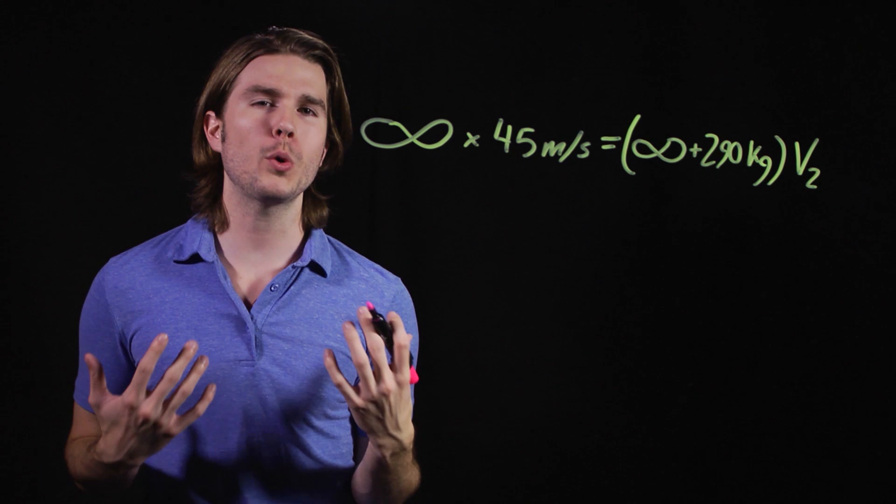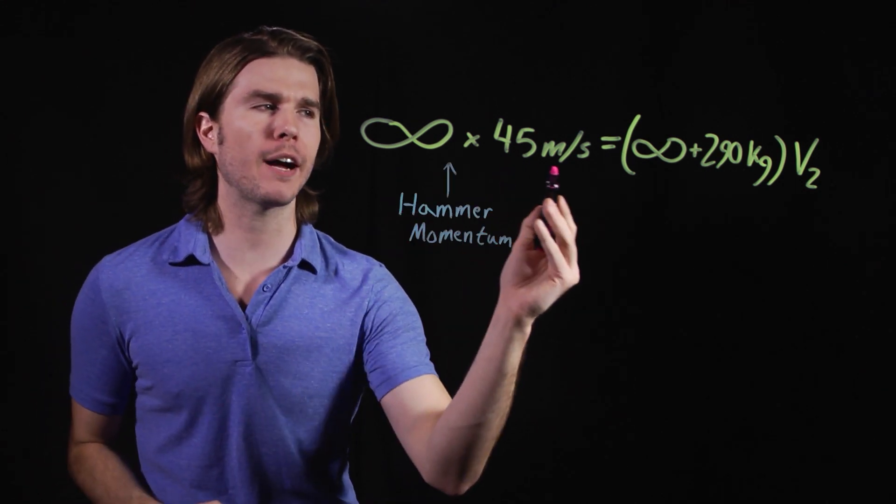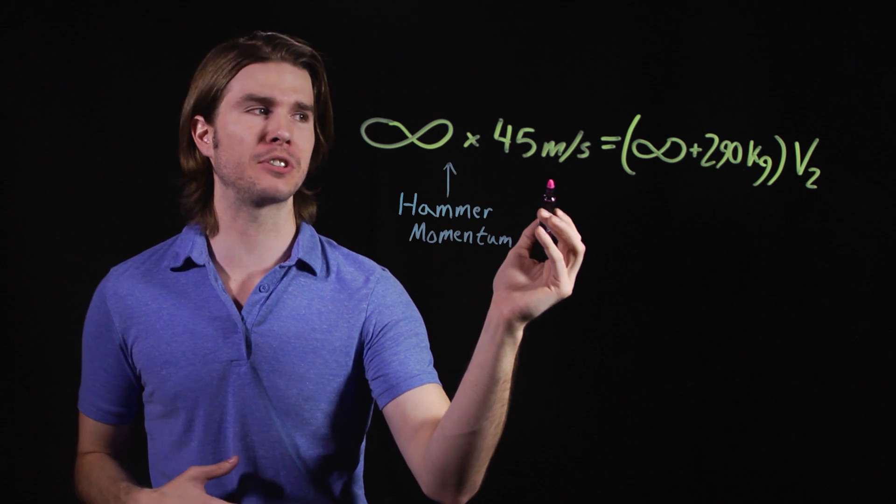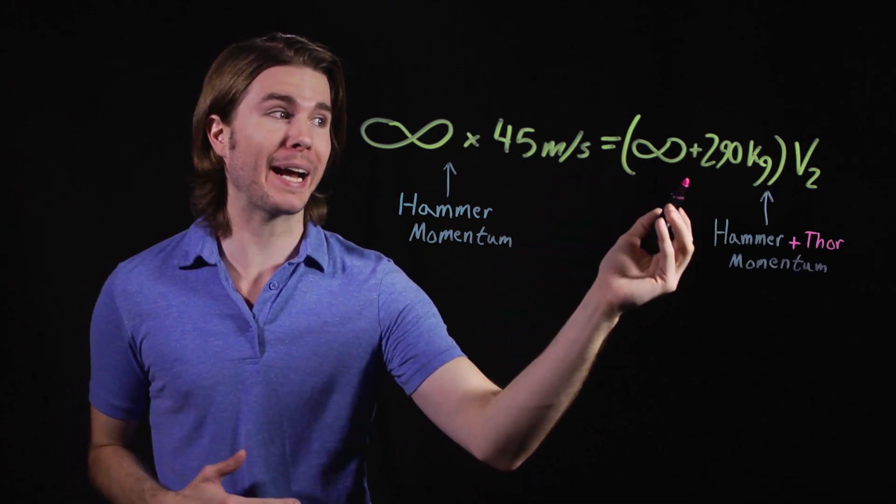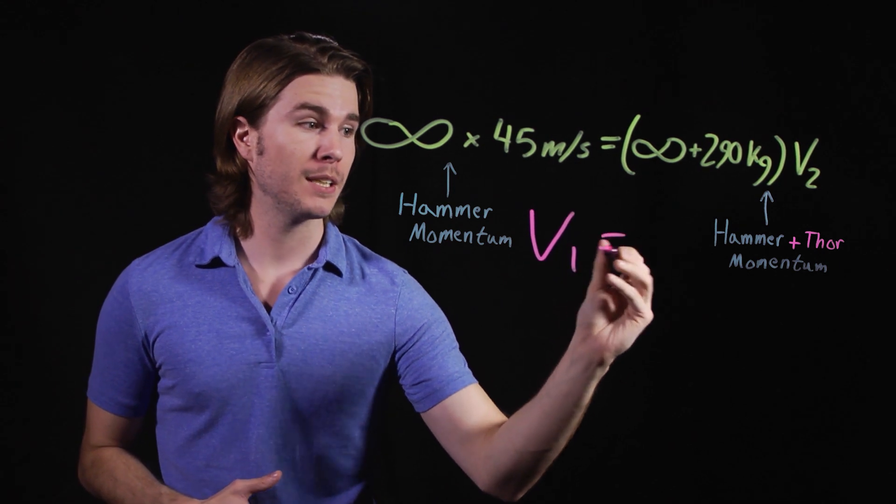Now if Thor can throw his hammer, which can make itself arbitrarily heavy at maybe 45 meters per second or 100 miles an hour, when he finally grabs back onto it with his 290 kilograms, his momentum basically won't change at all. It's an odd conclusion, but because Mjolnir can rapidly change its weight, Thor can fly at basically any speed he throws the hammer at.